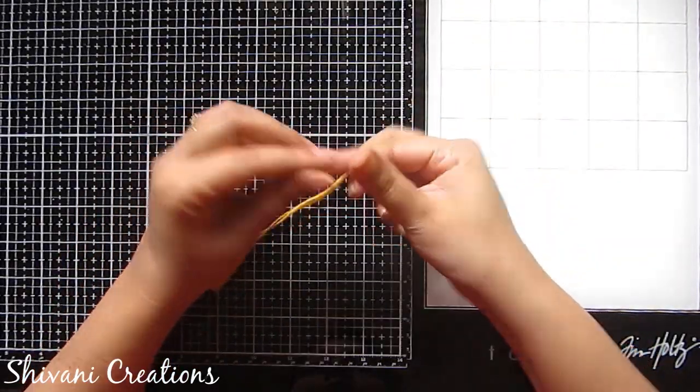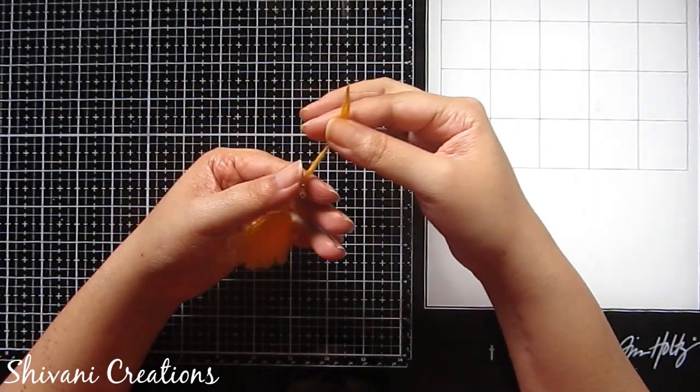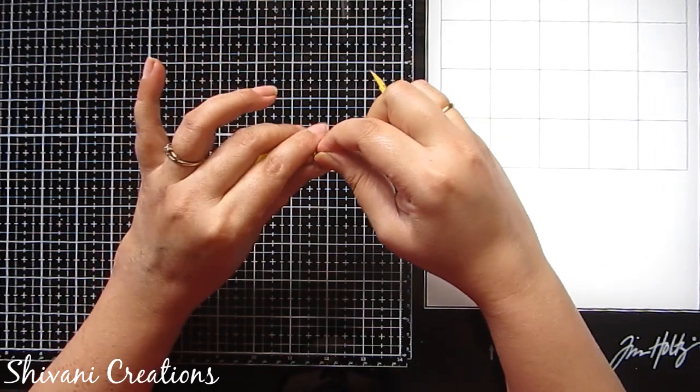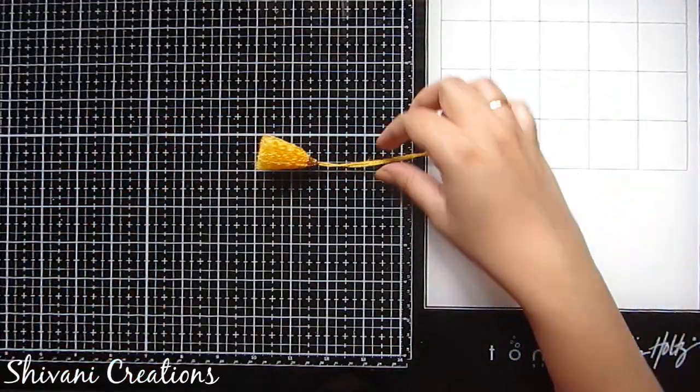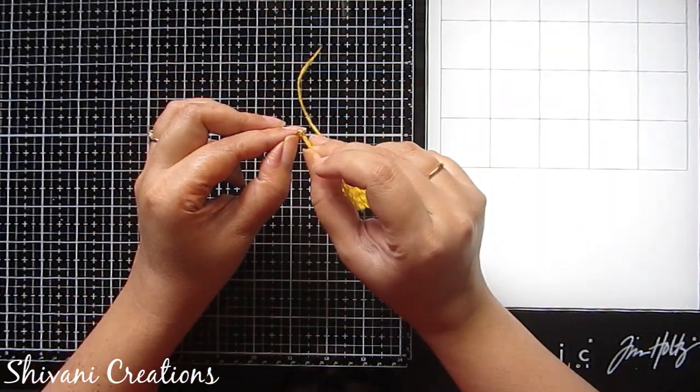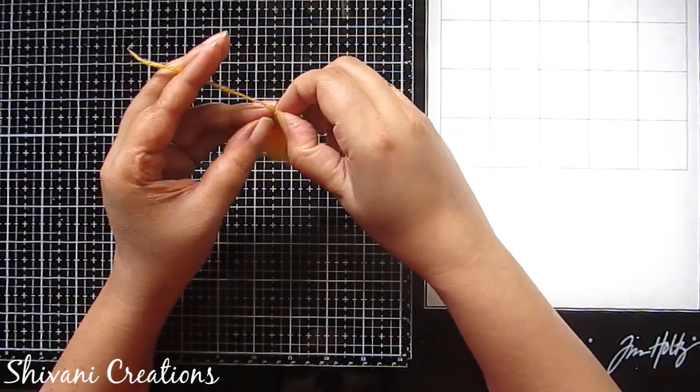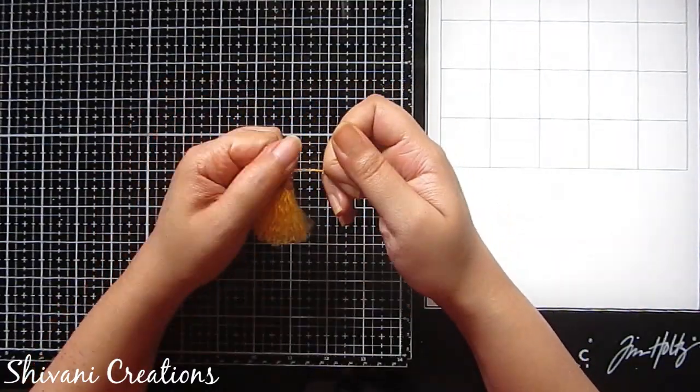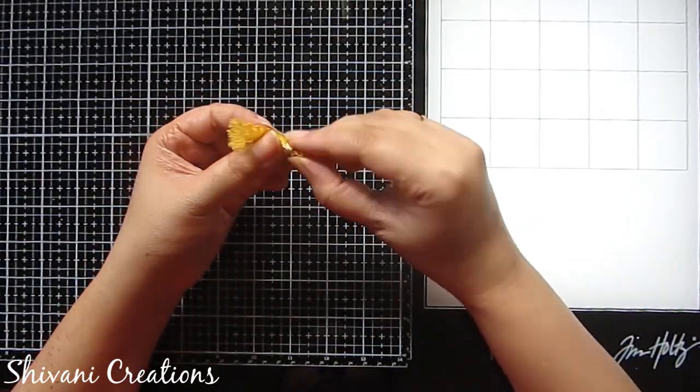Now to give it more finished look I am just passing one golden color flower cap through this. Just pull it towards bottom so that it will hold all the wool part from top very nicely. And then I am passing one jump ring through this and making some knots. Then cut the excess yarn from top and your yarn tassel is ready to use.